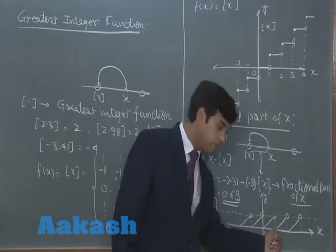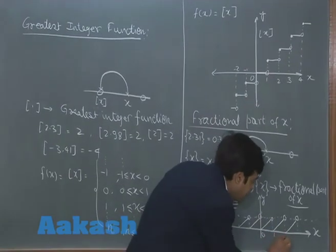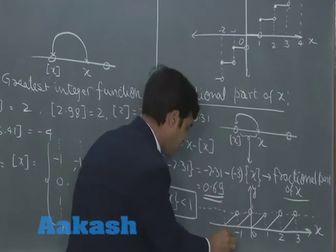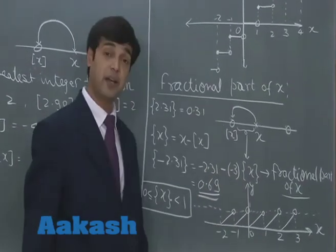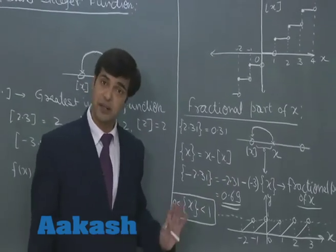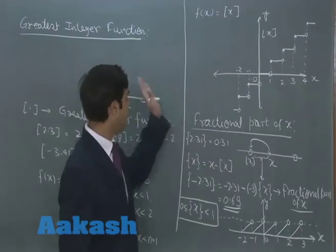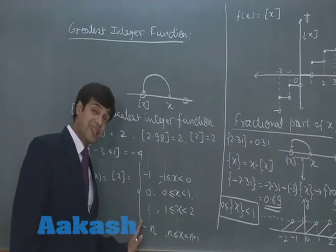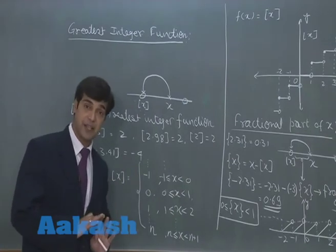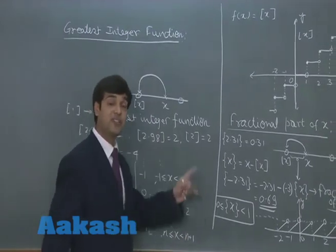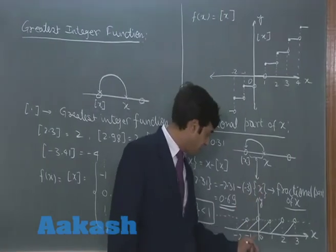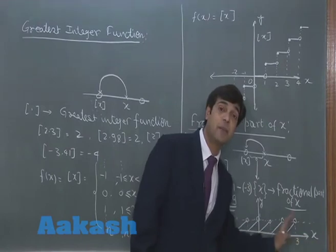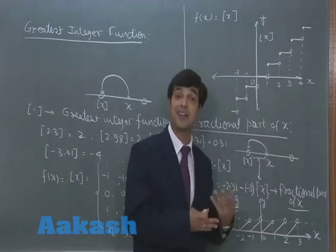From 0 to 1, then 1 to 2, then 2 to 3 — in this way the function is periodic and its period is 1, that is unity. Just as we wrote the greatest integer function across different intervals, we can write the fractional part function similarly across different intervals: x for [0,1), x minus 1 for [1,2), x minus 2 for [2,3), and so on for each segment.